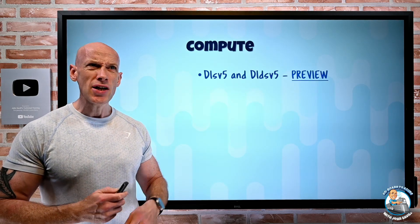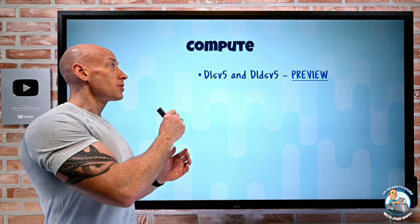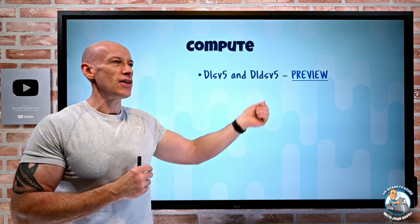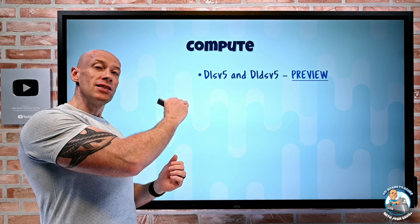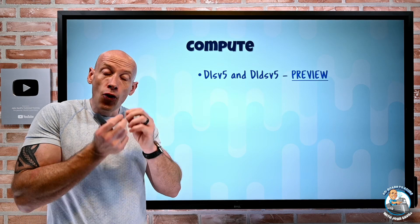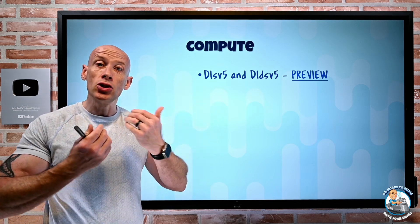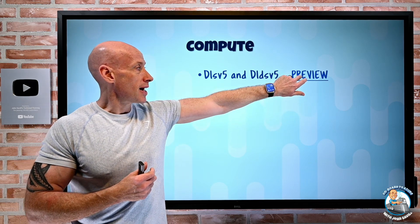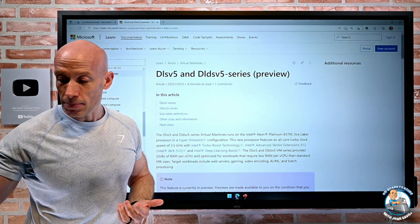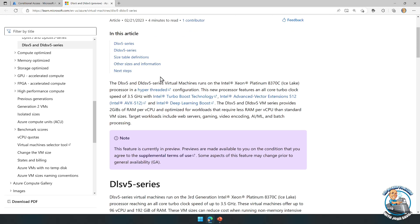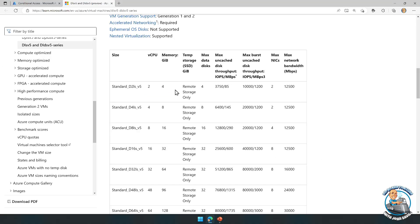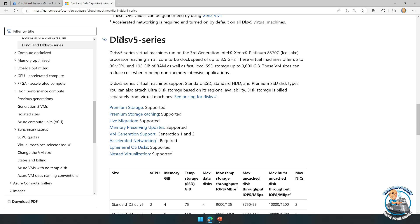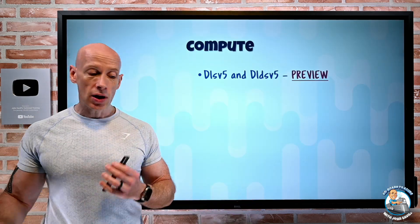Onto the new features on the compute side. I mentioned this last week, but I think some of the documentation got pulled. The DLSV5 and the DLDSV5 — remember the little D stands for it has a temporary disk, so you have a choice, and the L means little memory. This is a general purpose, but because it's little memory, instead of a 4-to-1 gibibyte of memory to every virtual CPU, it's a 2-to-1 ratio. Looking at the documentation, we can see that 1-to-2 ratio. These are in preview, not GA yet.